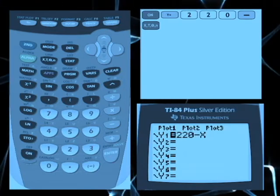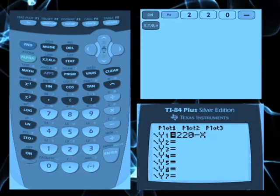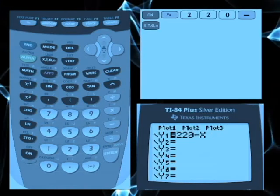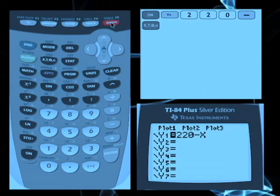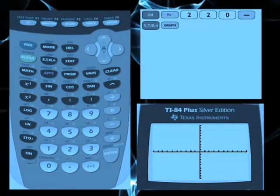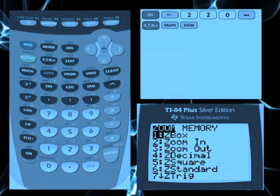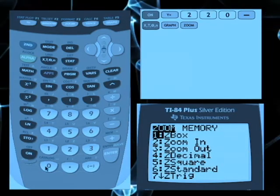Although you don't need to see the graph, it helps to understand why a graph is visible and why it isn't. Press the graph key. If your window settings are set to the standard settings, then you won't see a graph. To see the graph, press zoom and select the zoom fit option. Now you can see the graph.